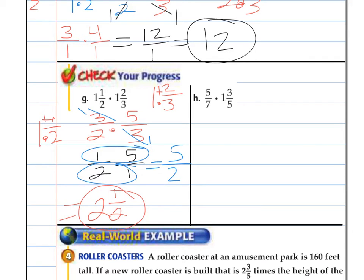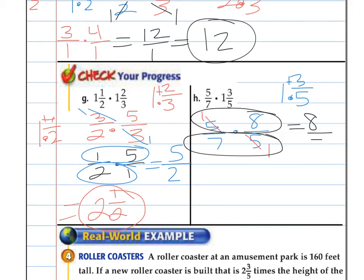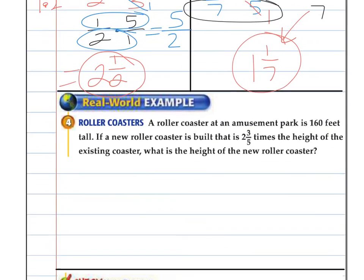Only one of these ones needs to be switched. So this is 5 sevenths. We do 1 and 3 fifths. Change it to an improper fraction. 5 times 1 is 5. Plus 3 is 8. 8 fifths. Cross cancel. 5 goes into 5 once. 5 goes into 5 once. We're left with 8 over 7. So 7 goes into 8 one time with 1 remaining.